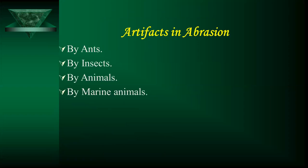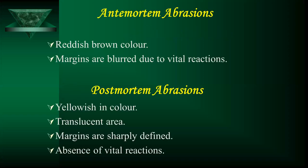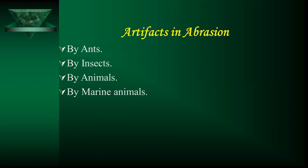Artifact abrasion can occur when a body is left for a long time — ants, insects, animals, or marine animals can cause marks on the skin. These can be differentiated from true antemortem abrasion using the same criteria used to differentiate antemortem from postmortem abrasion.